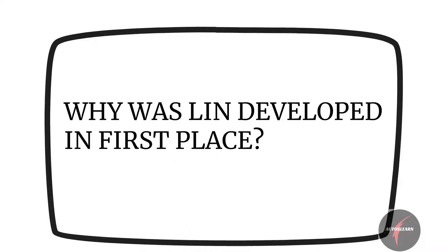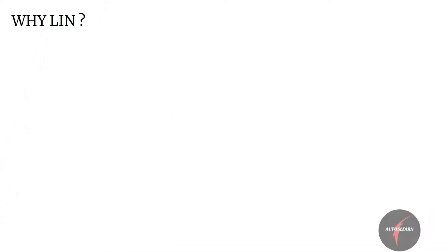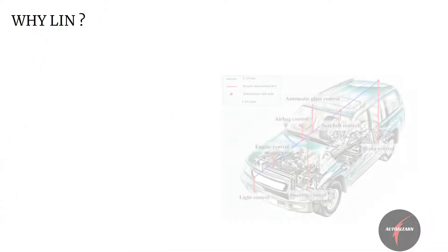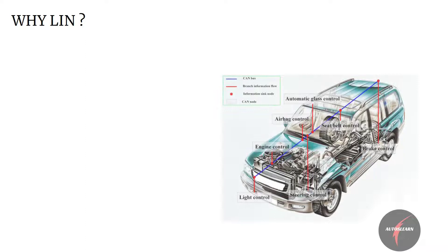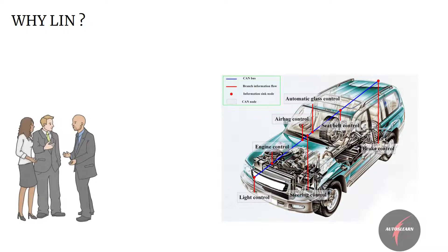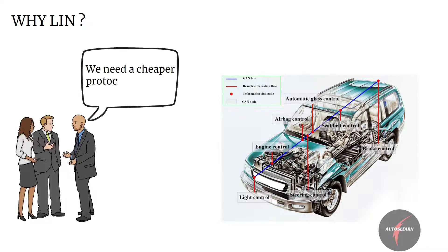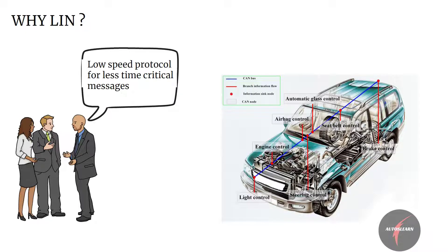What was going on in the minds of developers when they developed the LIN protocol? LIN came into existence at a time when CAN was the most common protocol used in cars. Car manufacturers were in need of a protocol which was cheaper compared to CAN, with the trade-off of being slower than CAN. They felt that not everything inside the car needed to communicate at CAN speed, and instead could be managed by a lower speed protocol for less time-critical messages without any extreme fault tolerance.